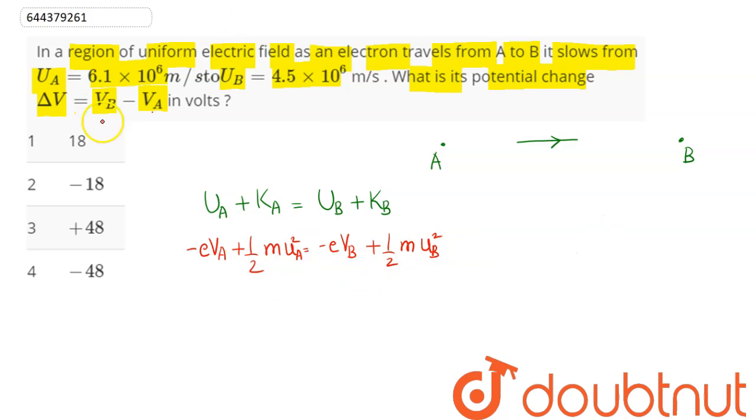So here to find Vb - Va, we bring e×Vb to the left side, and taking e common, this comes as Vb - Va. And this here, ½m, comes as ub² - ua².